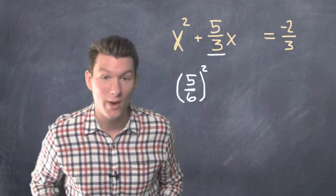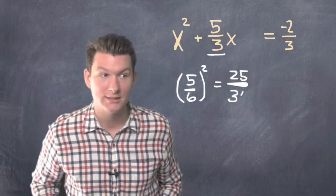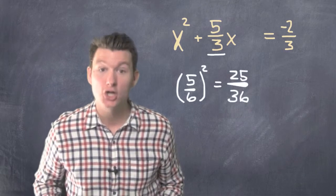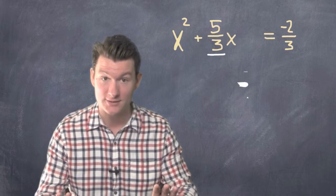and we square 5 over 6. So we do 5 times 5 is 25, 6 times 6 is 36, so we've got 25 over 36. That's what we add to both sides.